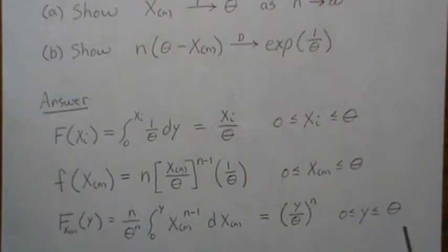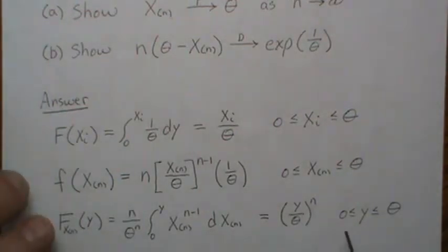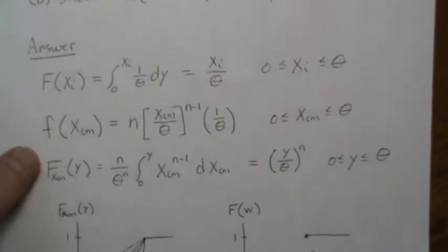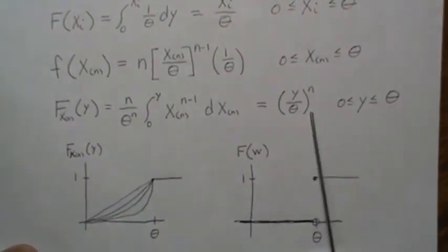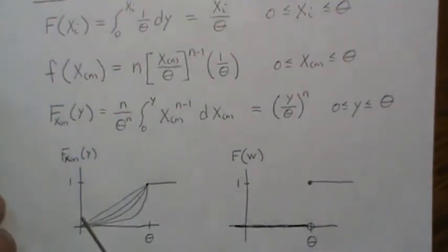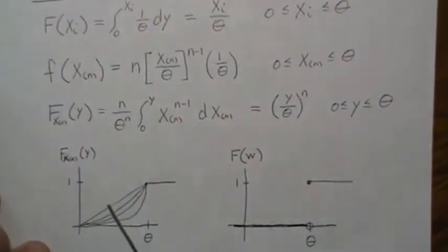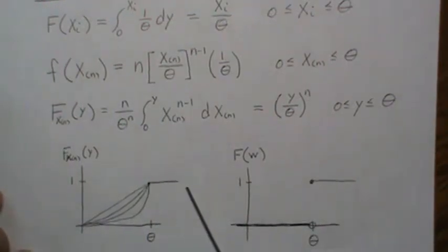Unless y is theta, then it's one. And then one to a number raised to any power, just one. So let's look at what's going on here. So here's the CDF of the nth order statistic. And when n is one, it's basically a straight line from zero to theta. And then one everywhere else.